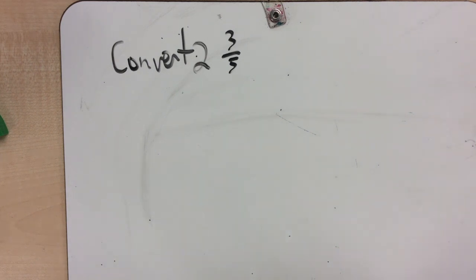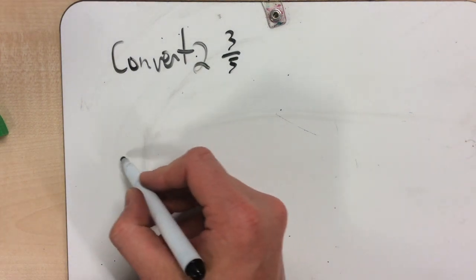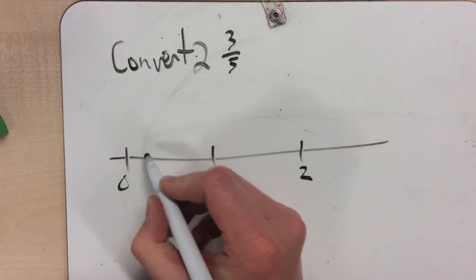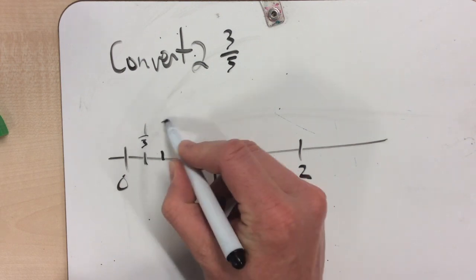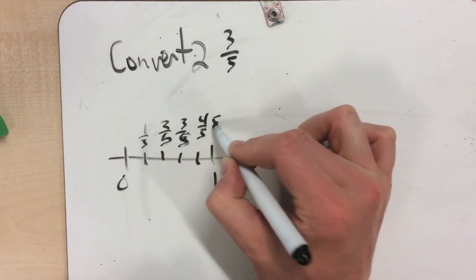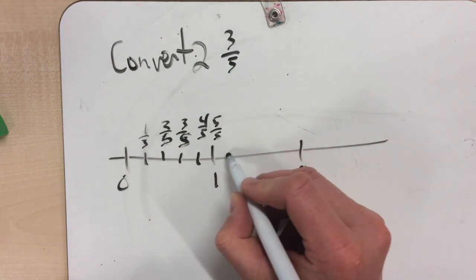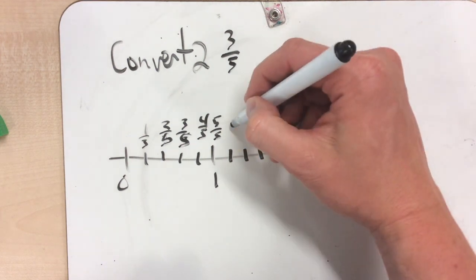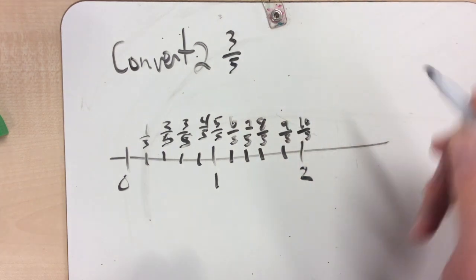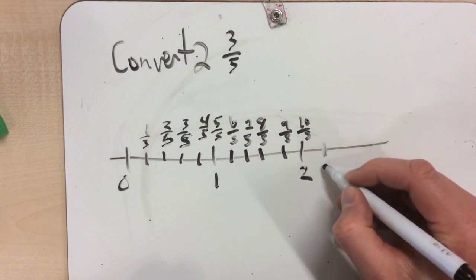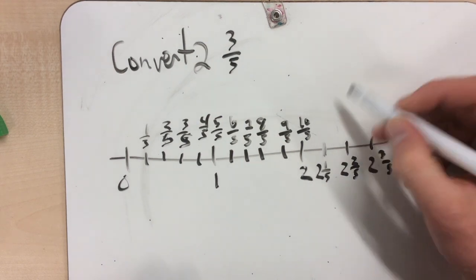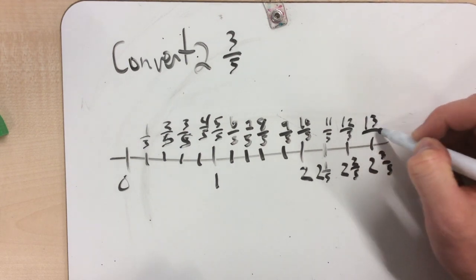I'm going to convert 2 and 3 fifths. I'm going to use a number line. I know this is going to be bigger than 2, so I've got 0, 1, and 2. That will be 1 fifth, 2 fifths, 3 fifths, 4 fifths, and 1 will be the same as 5 fifths. I've got 1, 2, 3, 4, 5 more: so 6 fifths, 7 fifths, 8 fifths, 9 fifths, 10 fifths. And then 2 and 1 fifth, 2 and 2 fifths, 2 and 3 fifths — so that's going to be 11 fifths, 12 fifths, 13 fifths.